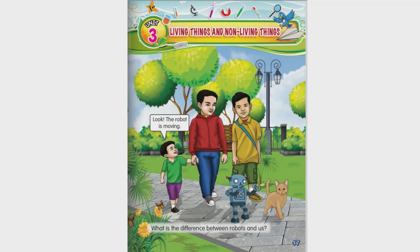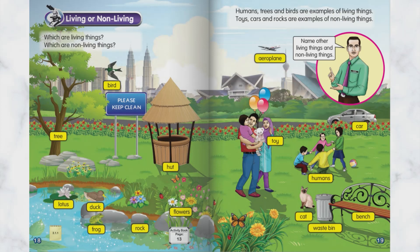Alright, so Unit 3 begins from page 17. It's all about living things and non-living things. Now please turn to page 18 and 19 and try to identify the living things and non-living things in the picture.